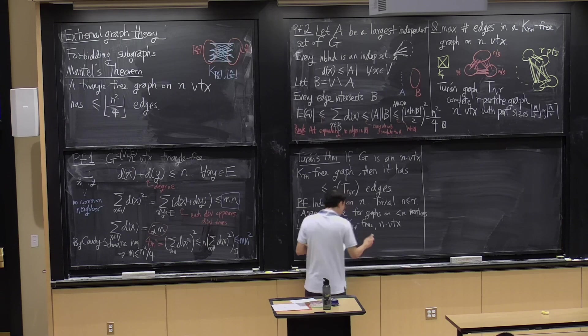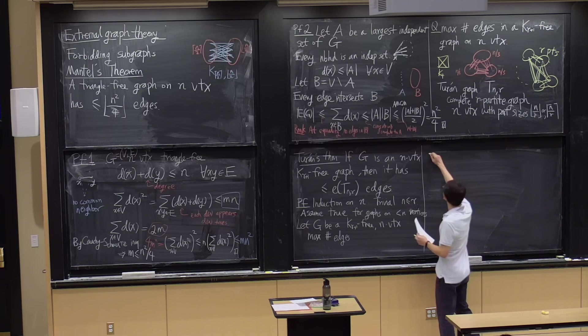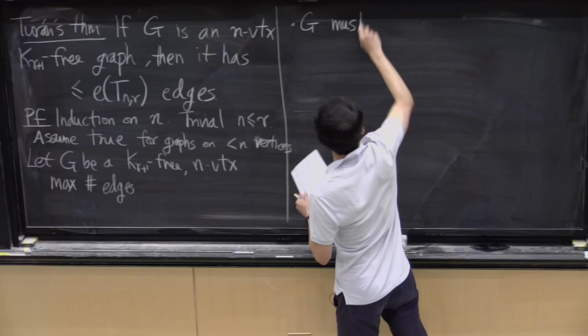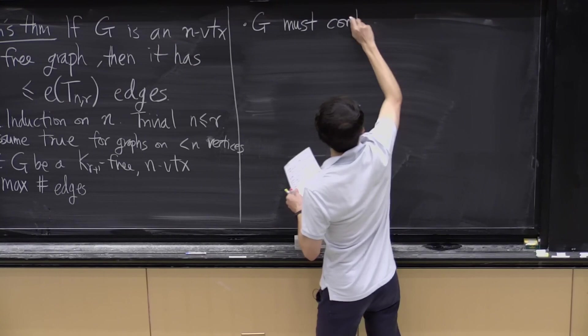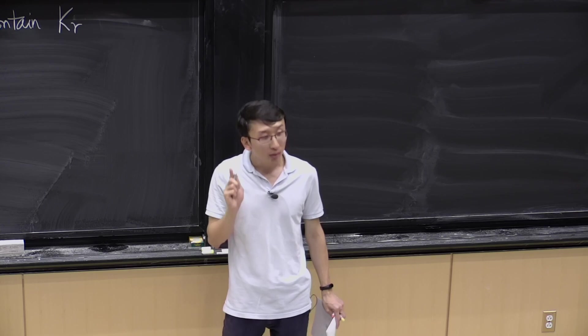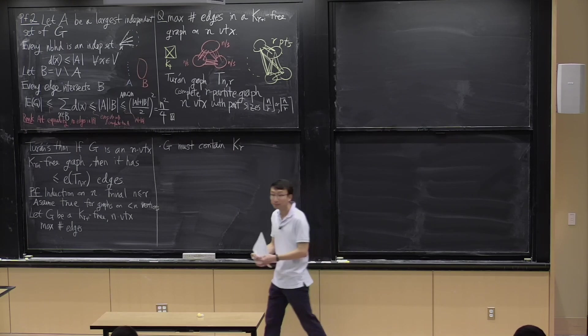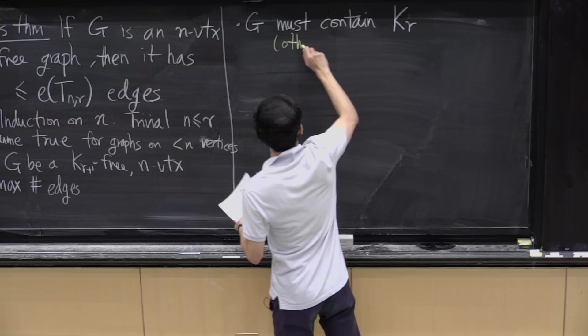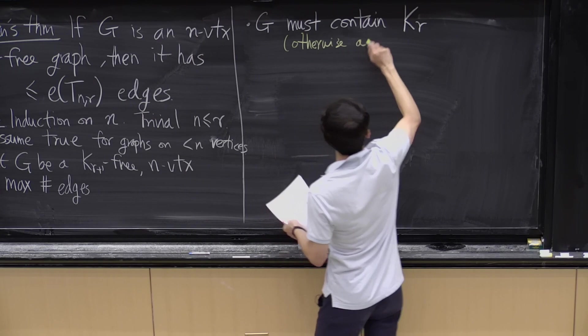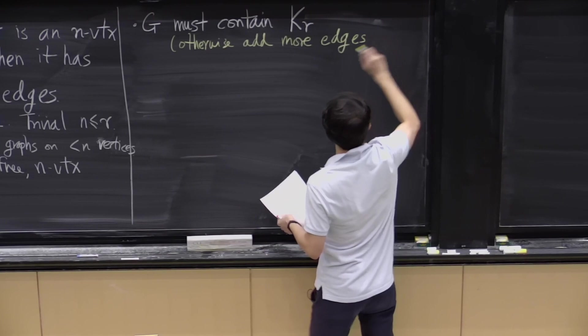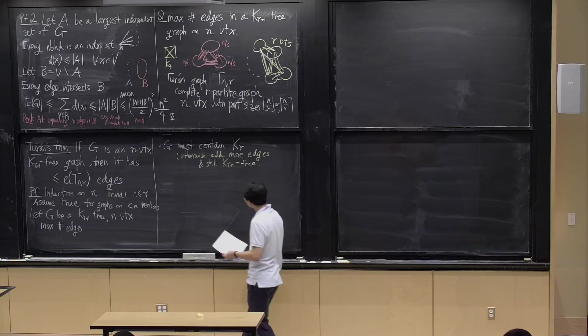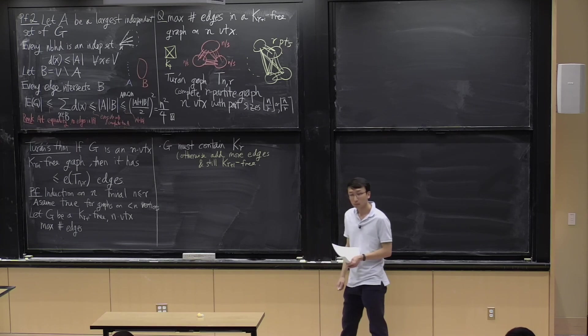I claim that G must already contain a clique on r vertices. If G does not contain a clique on r vertices, then I can add in more edges and still maintain the property of being K_{r+1}-free. So we can assume G must contain a K_r.